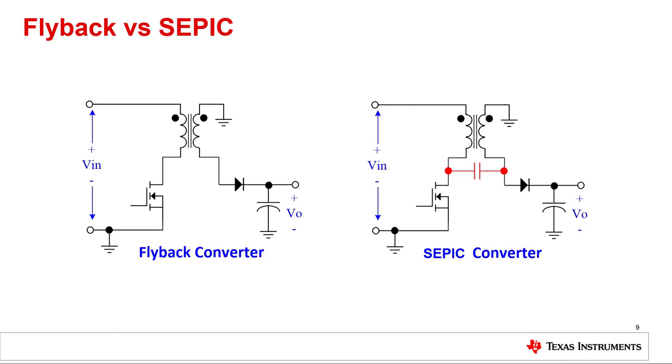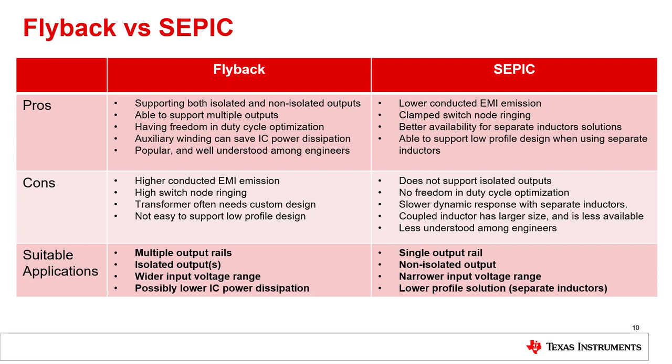So flyback and SEPIC have a very similar schematic and are recommended for similar applications. This table shall give you an overview on when to use which type of converter. For example, in general the flyback is very well understood. The advantage of the SEPIC is that it can support lower EMI and it can support lower profile especially when using separate inductors instead of coupled inductors. So select a flyback for lower cost, multiple outputs, wide input voltage range or if you need the isolated output.